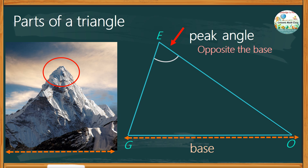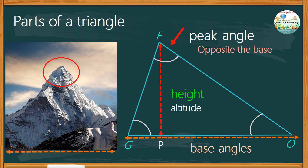On the base, there are two angles: angle G and angle O. These are the base angles. And the line segment from the peak that is perpendicular to the base — let's say point P here — this is called the height or altitude. So when you say perpendicular, it has to be at an angle of 90 degrees with the given line.